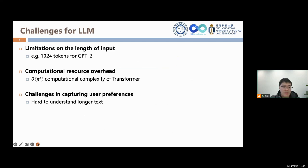The second challenge is the computational resource overhead, because the computational complexity of transformer is n-square. Moreover, it is also hard for large language models to understand long text.